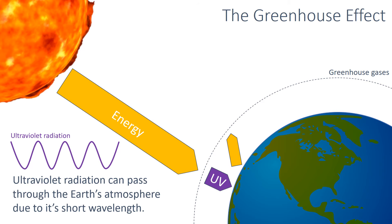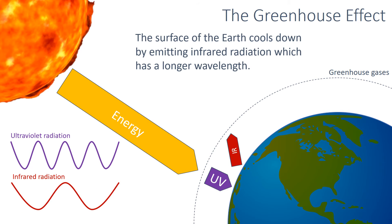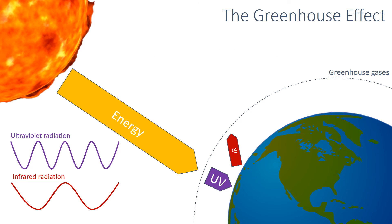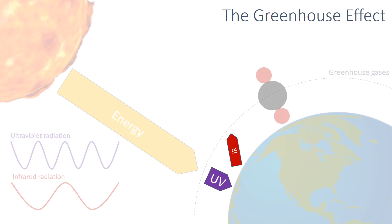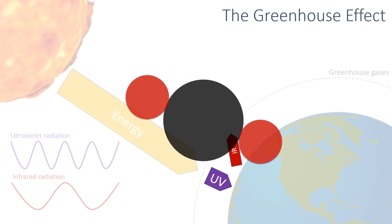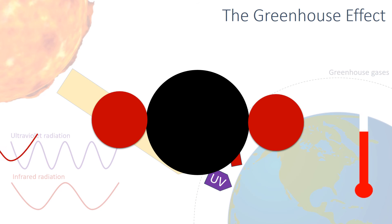As the surface of the Earth cools down, it emits energy with a longer wavelength — infrared radiation. The greenhouse gases can absorb this infrared radiation, and so rather than passing back out into space, it stimulates the bonds within the greenhouse gas molecules, causing them to vibrate, bend and stretch more vigorously, raising their temperatures, and along with it the temperature of the Earth's atmosphere.